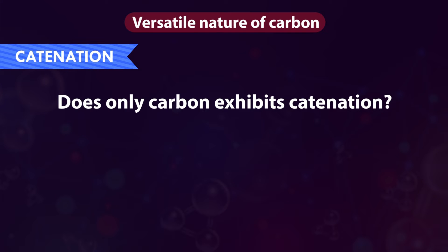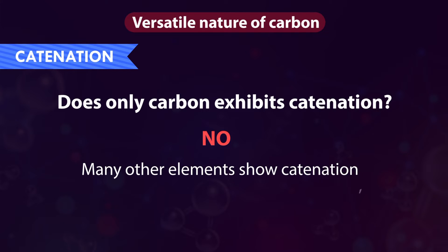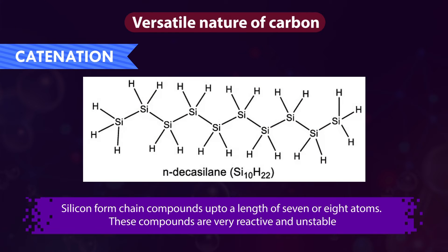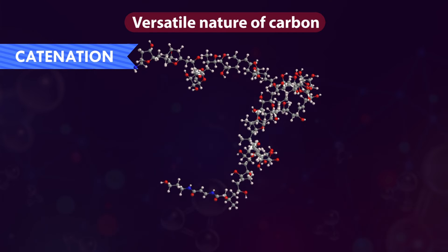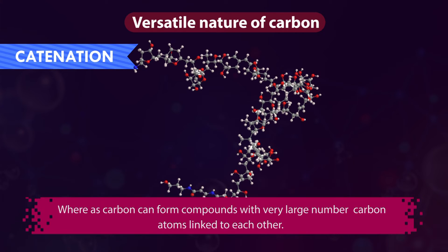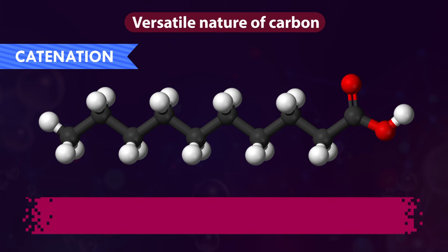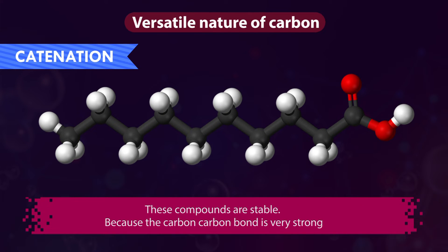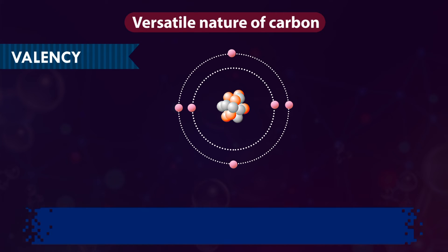Does only carbon exhibit catenation? No. Many other elements show catenation — for example, silicon. Silicon forms chain compounds up to a length of 7 or 8 atoms, but these compounds are very reactive and unstable. Whereas carbon can form compounds with a very large number of carbon atoms linked to each other, and these compounds are very stable because the carbon-carbon bond is very strong.